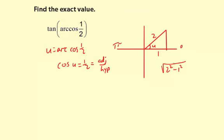To solve for the unknown side, it's going to be the square root of 2 squared minus 1 squared, which is the square root of 4 minus 1 or square root of 3. So this side is going to be the square root of 3.